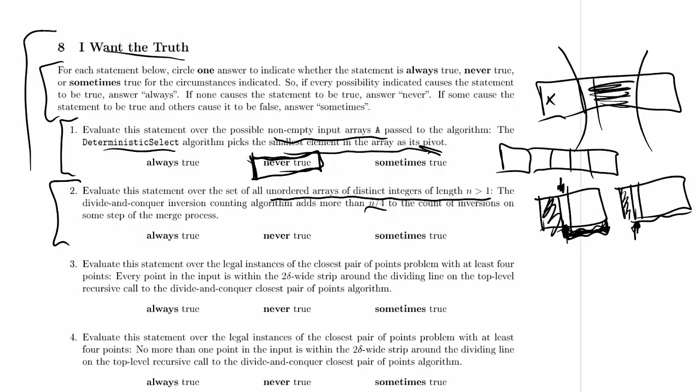Can we add more than n over 4? Sure — if every element in the left half is greater than the first element in the right-hand array, we could add about n over 2 at once. Is it sometimes the case that we don't add more than n over 4? Yes — if the initial array was sorted, we'll never add anything to the inversion count. So there are cases where we do and cases where we don't, which means this is sometimes true.